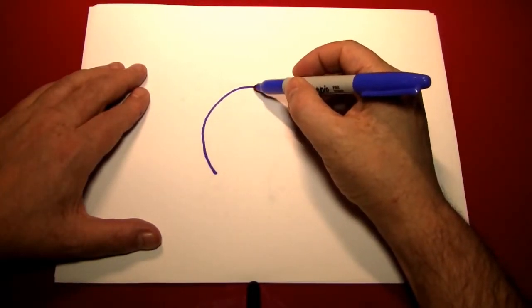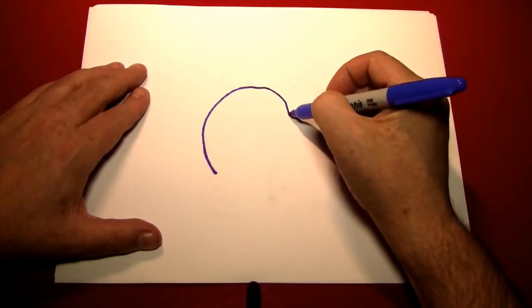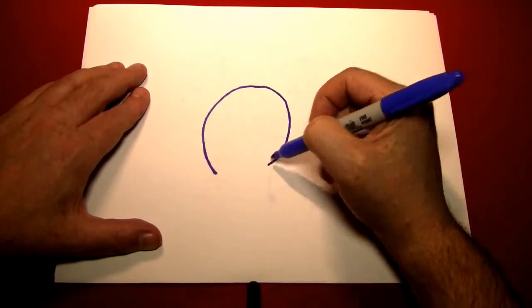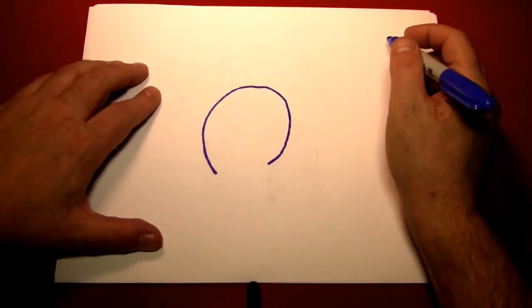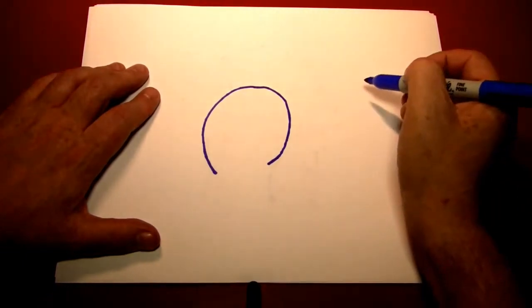Now, we're going to make a line on the other side, just like it, or as much as we can. There we go. Now, we've left a space here at the bottom, which we'll be using later.